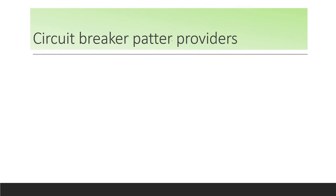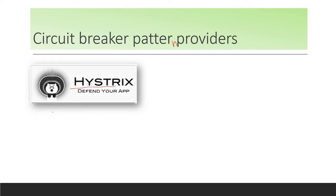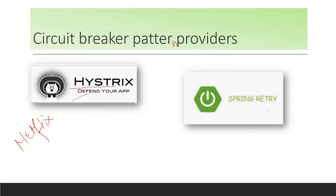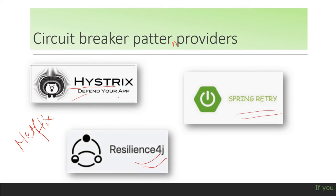Circuit breaker is a design pattern for microservices in general, and there are many implementation providers in the market. First is Hystrix, provided by Netflix. Netflix implemented Hystrix in their internal application to take care of failures in services. Second is Spring Retry, from the Spring team at Pivotal, which also implements the circuit breaker design pattern. Third is Resilience4j. All three are popular and you can use any of them based on your application's requirements.